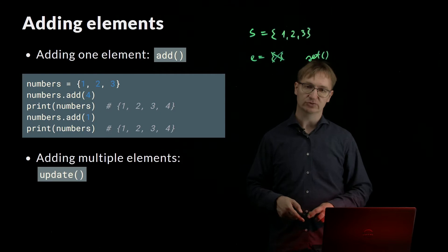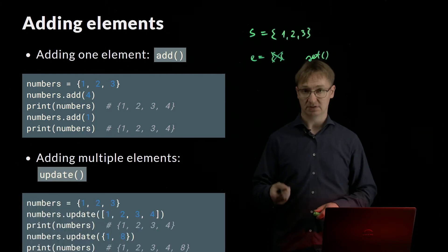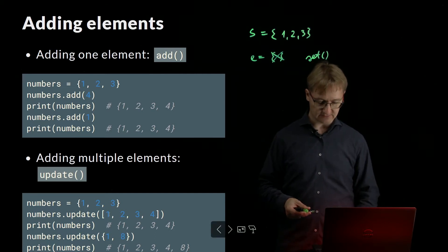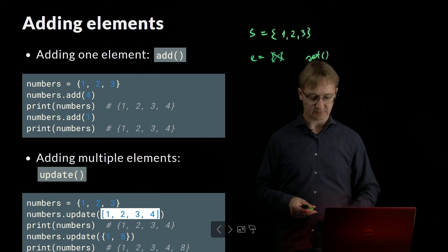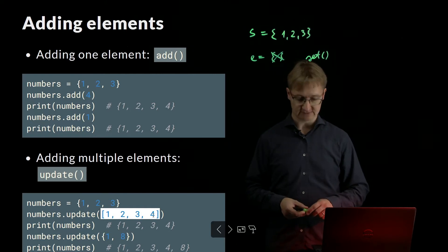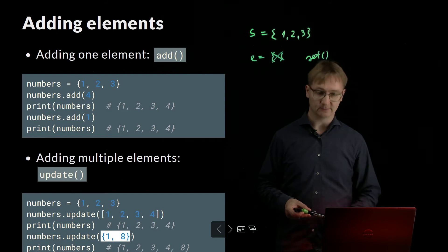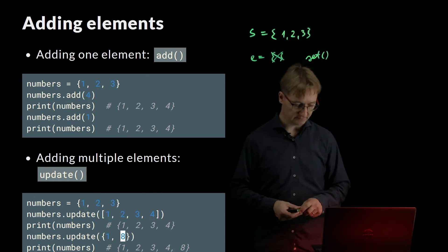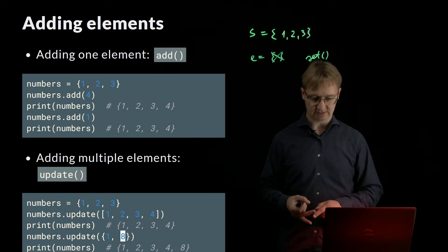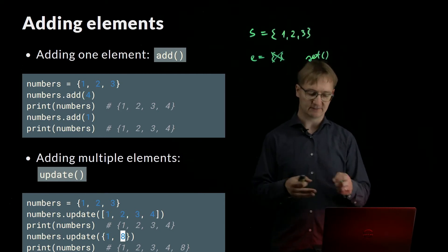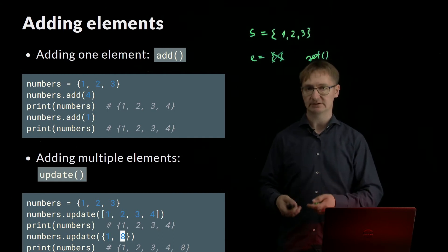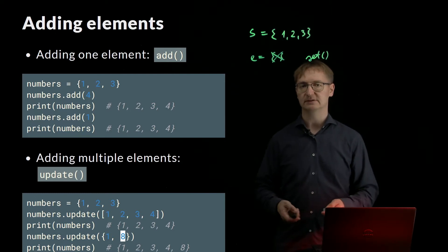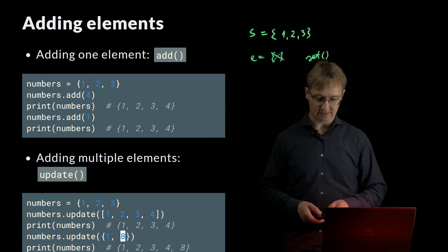If I try to add multiple elements, I can use UPDATE. The UPDATE method works similarly — I can provide several elements into it. For example, if I update the current SET with a list, and I already have 1, 2, and 3, only the element 4 is added. If I update with another SET, only 8 is added because 1 is already in my numbers SET. With UPDATE I can use lists or SETs — it takes every element and tries to add it. If the element already exists, it is ignored with no error, so you only ever have one unique element of the same value.